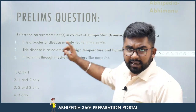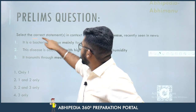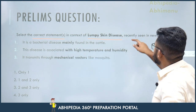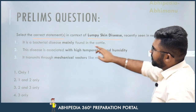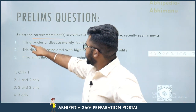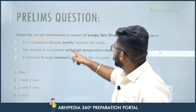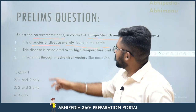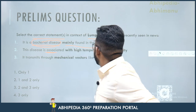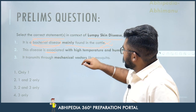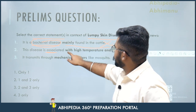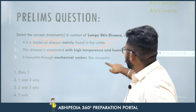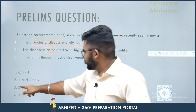Let's look at probable questions. Question: Select the correct statement in the context of Lumpy Skin Disease recently seen in news. Statement 1: It is a bacterial disease mainly found in cattle — 'mainly found in cattle' is correct, but it is not a bacterial disease, so Statement 1 is wrong. Statement 2: This disease is associated with high temperature and humidity — correct. It transmits through mechanical vectors like mosquitoes — correct. So the answer is Statement 2 only.